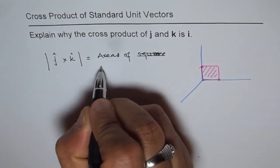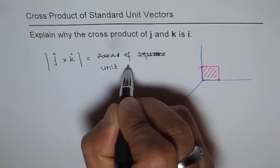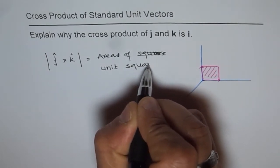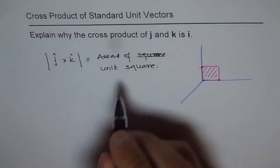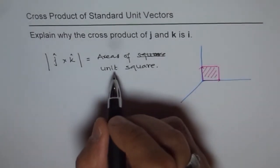In fact, area of unit square, right? That's the magnitude. And the direction is normal to this square, right?